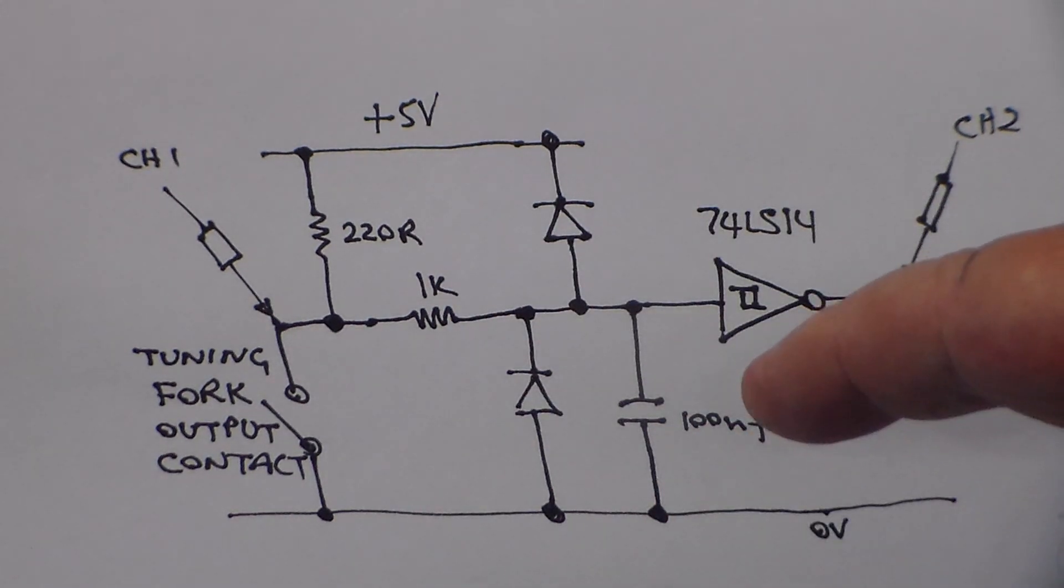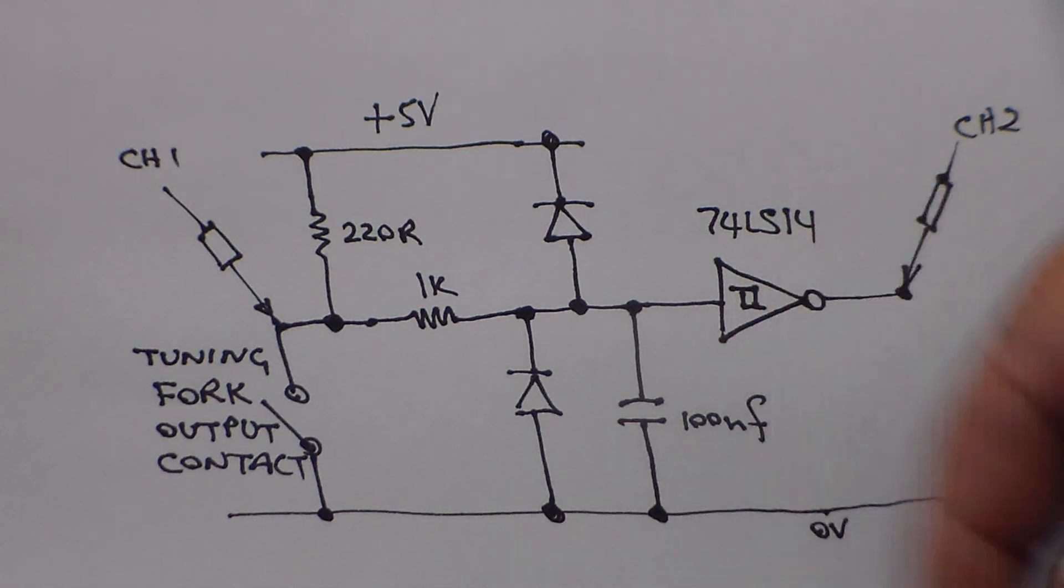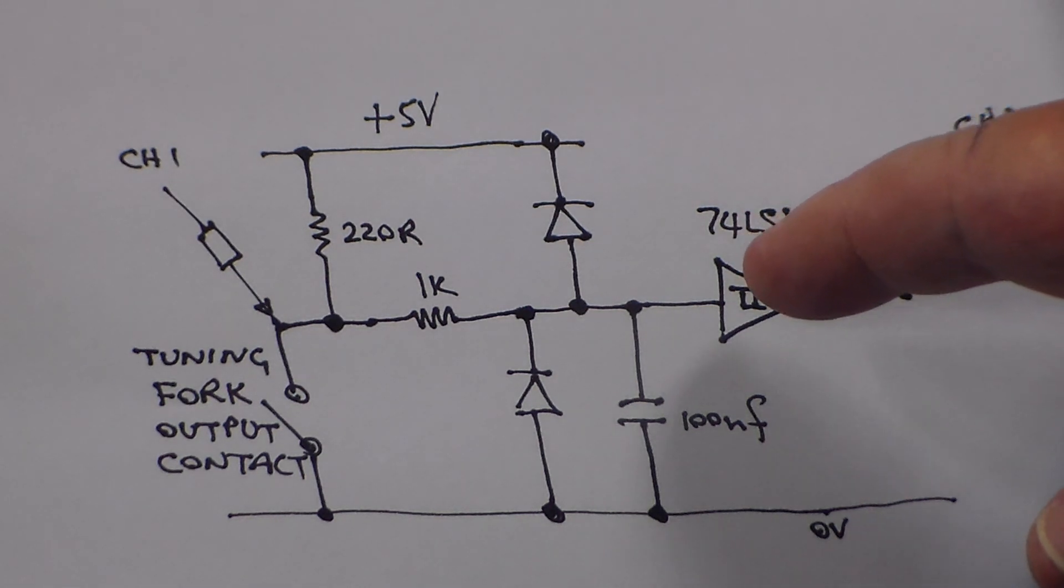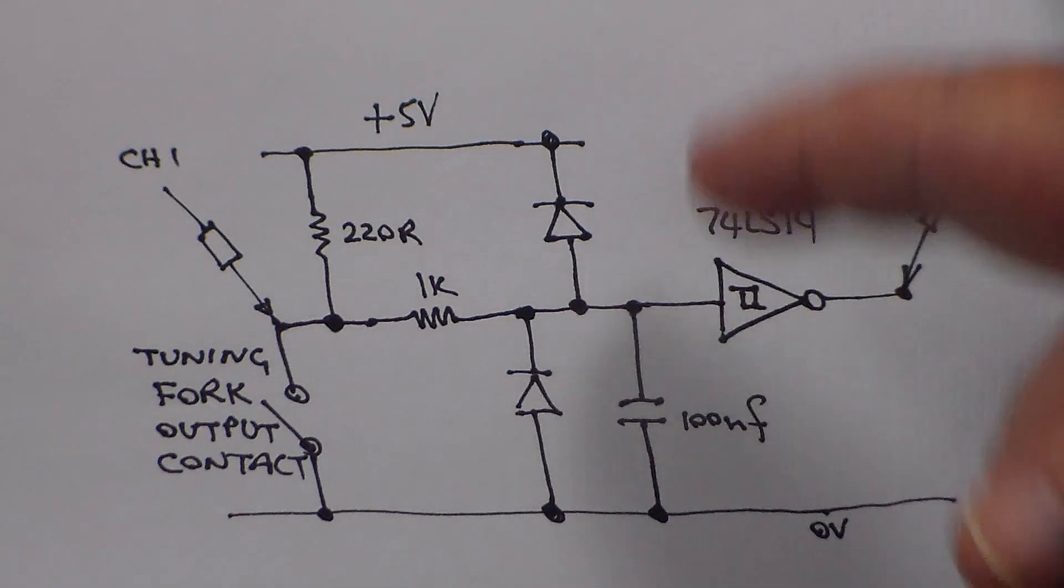And then it finally goes into this Schmidt trigger which just takes out some of the noise that is within the range of standard logic levels.